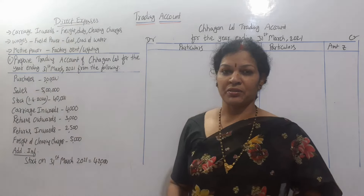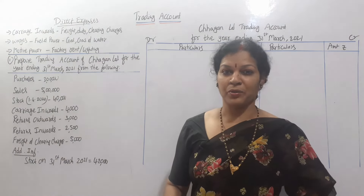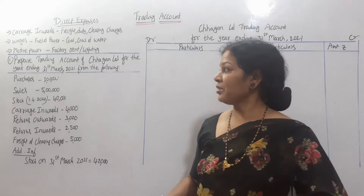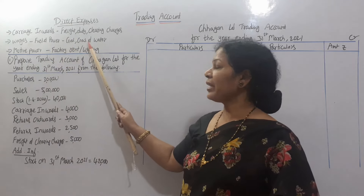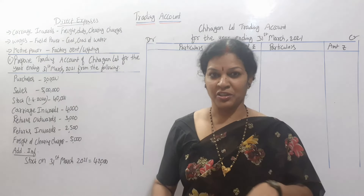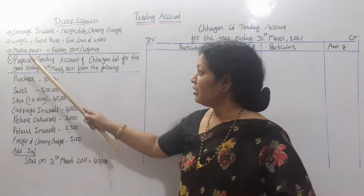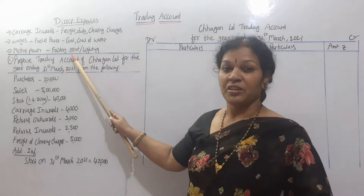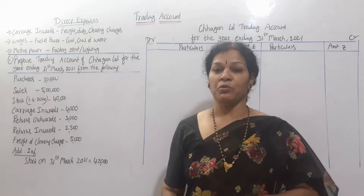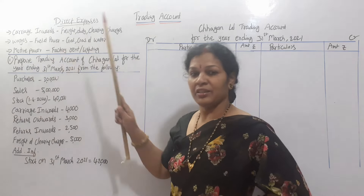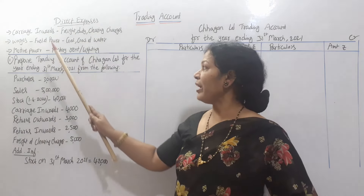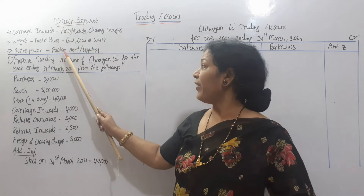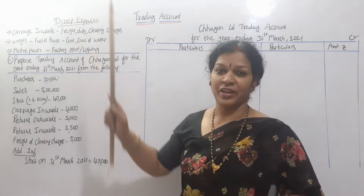Fuel and power is also a factory expense. In the office, we have current expenses and charges, but fuel and power — coal, gas, water — is in manufacturing. Motive power is also in manufacturing. Factory rent means direct expenses — we have to pay rent for the factory. Factory lighting also means direct expenses.